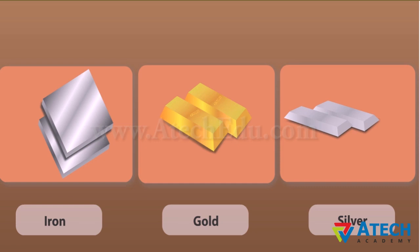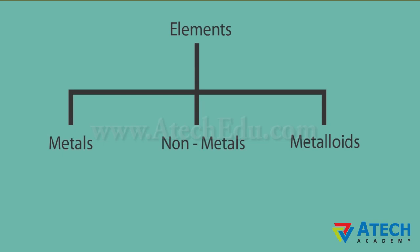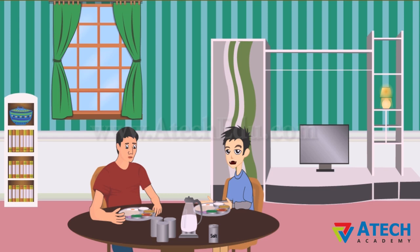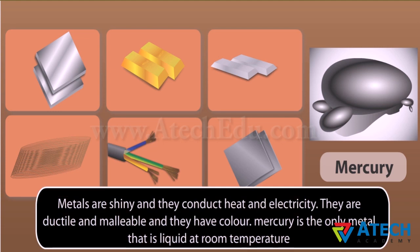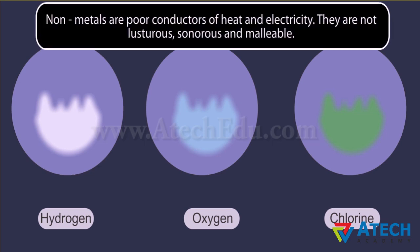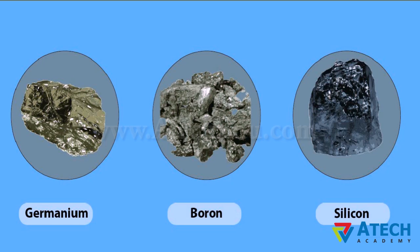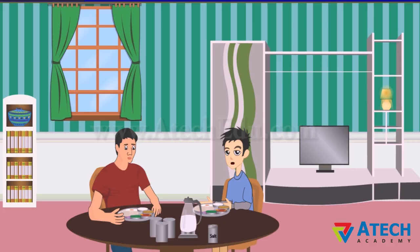Metals are shiny and conduct heat and electricity; they are ductile and malleable. Mercury is the only metal that is liquid at room temperature. Non-metals are poor conductors of heat and electricity; they are not lustrous, sonorous, or malleable. Examples of non-metals include hydrogen, oxygen, and chlorine. Some elements have intermediate properties between metals and non-metals — these are called metalloids. Examples include boron, silicon, and germanium.